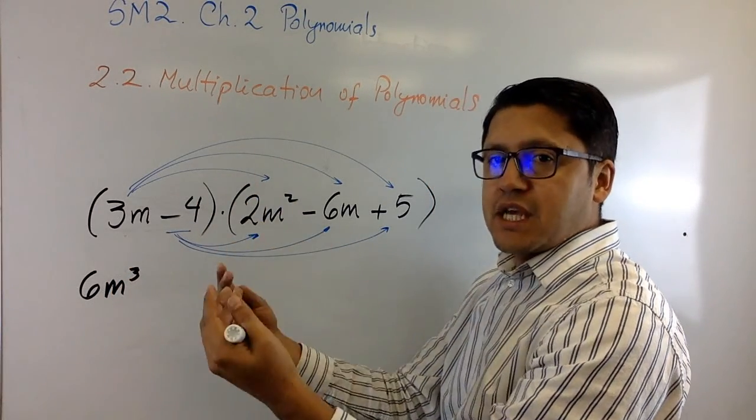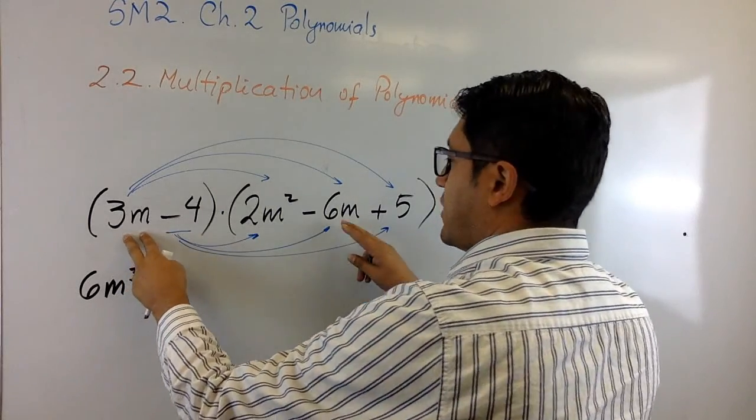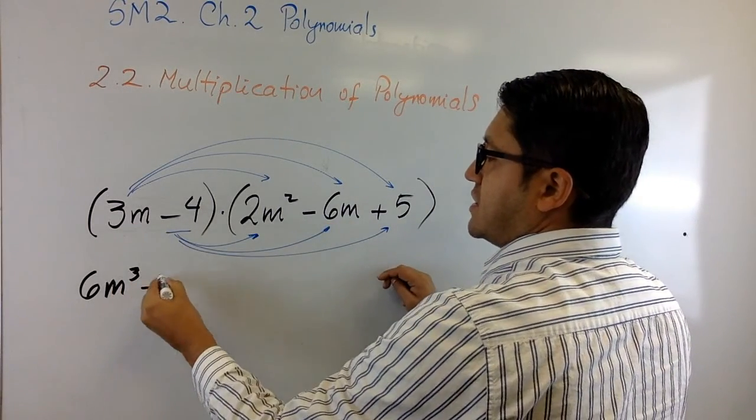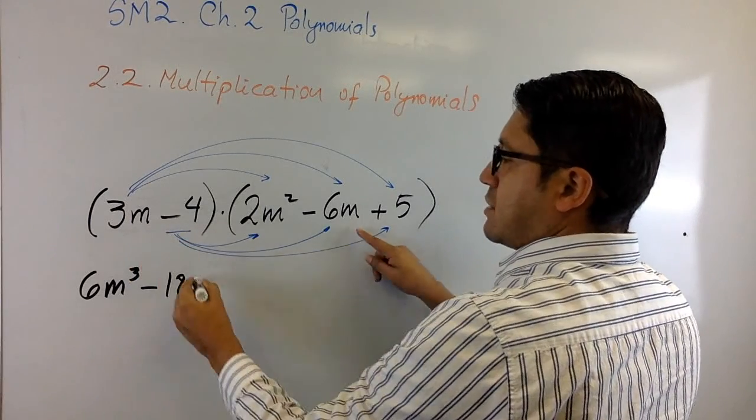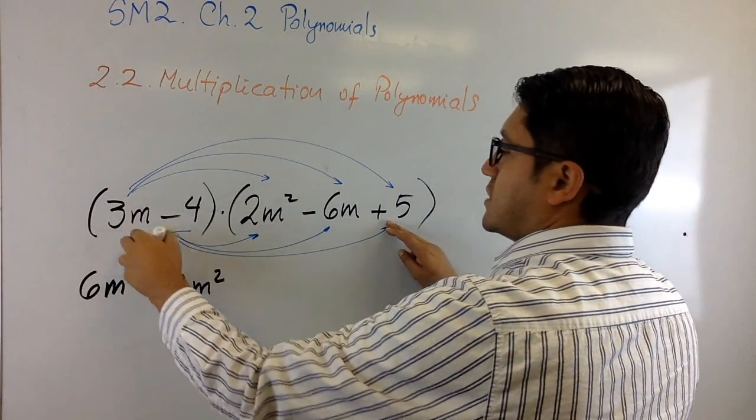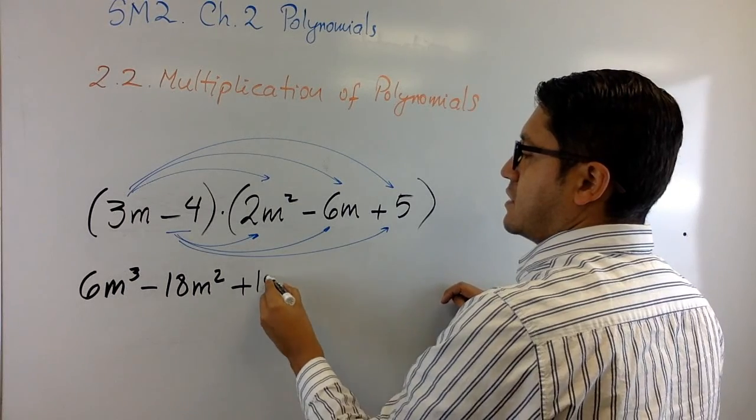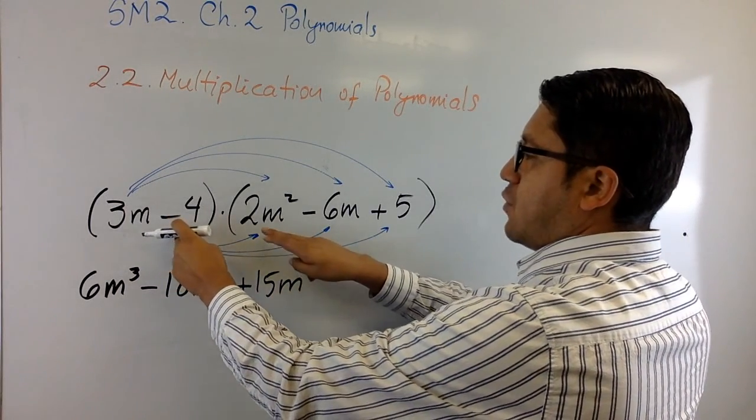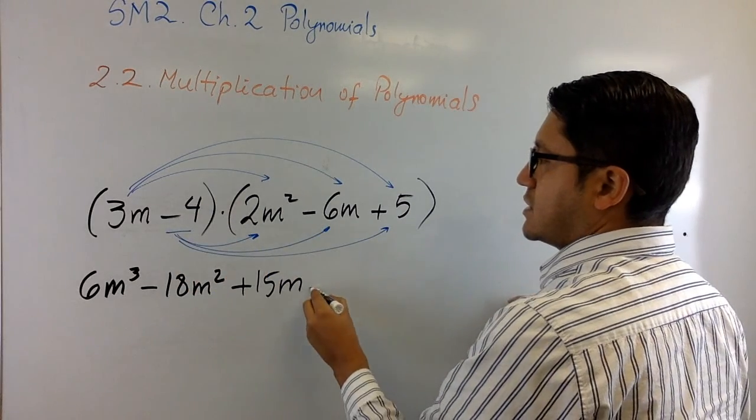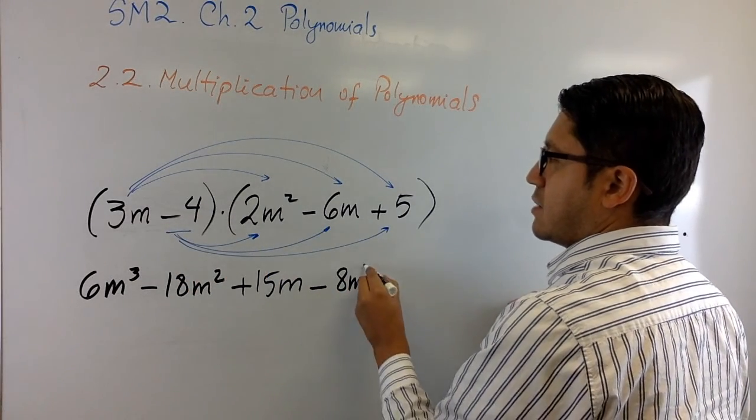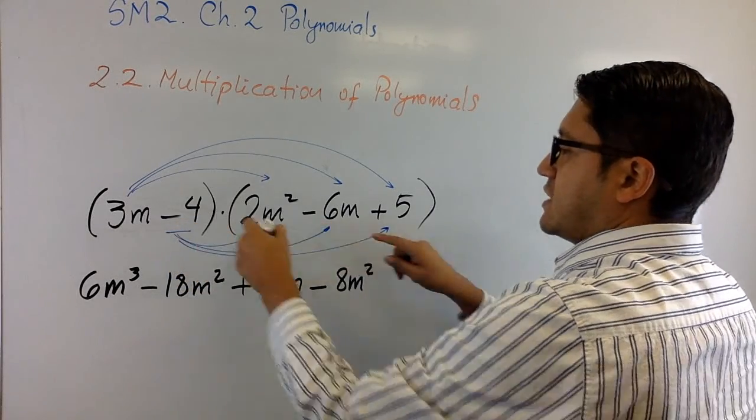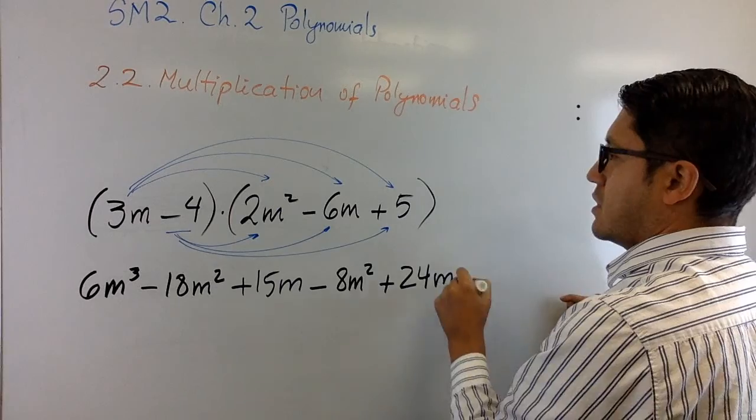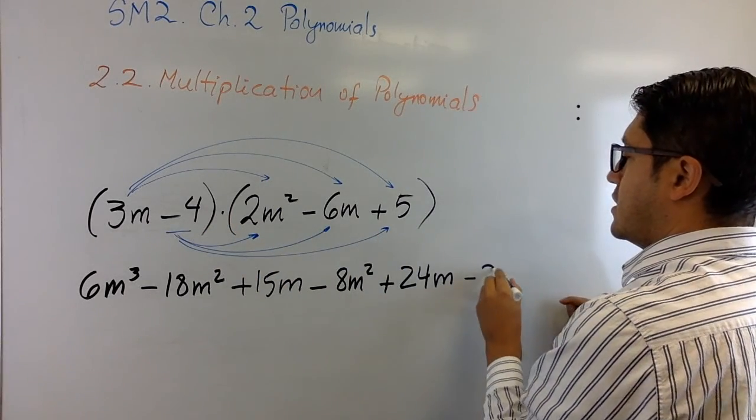And now I continue doing the same thing taking this into account. 3m times negative 6m. This is negative 18 and m times m is m squared. And now this is going to be 4 times 2m squared is negative 8m squared. This negative 4 times negative 6 is 24m. And this is a negative 20.